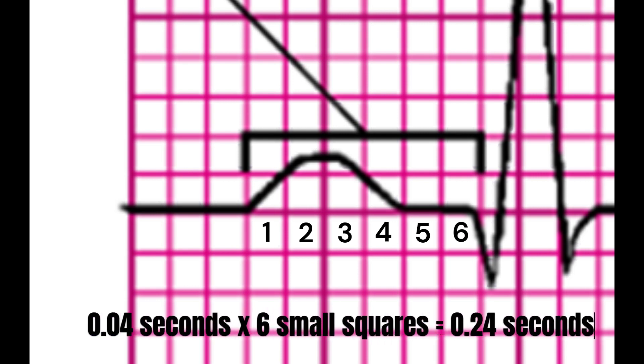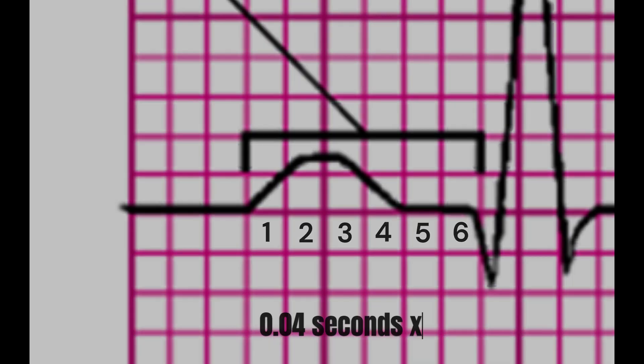Each small square on an EKG strip represents 0.04 seconds, so multiply the number of small squares by 0.04 to get the duration of the PR interval in seconds.